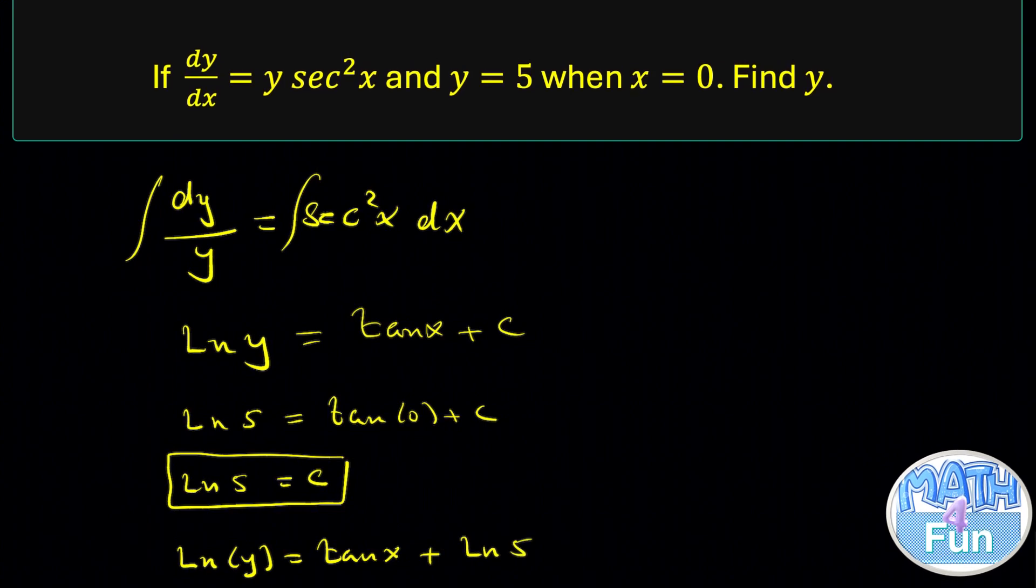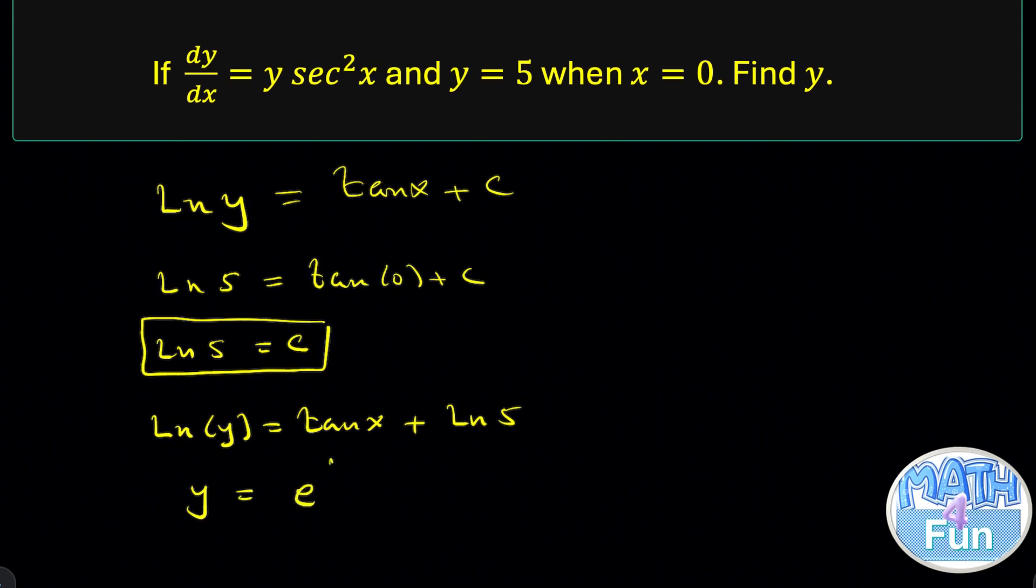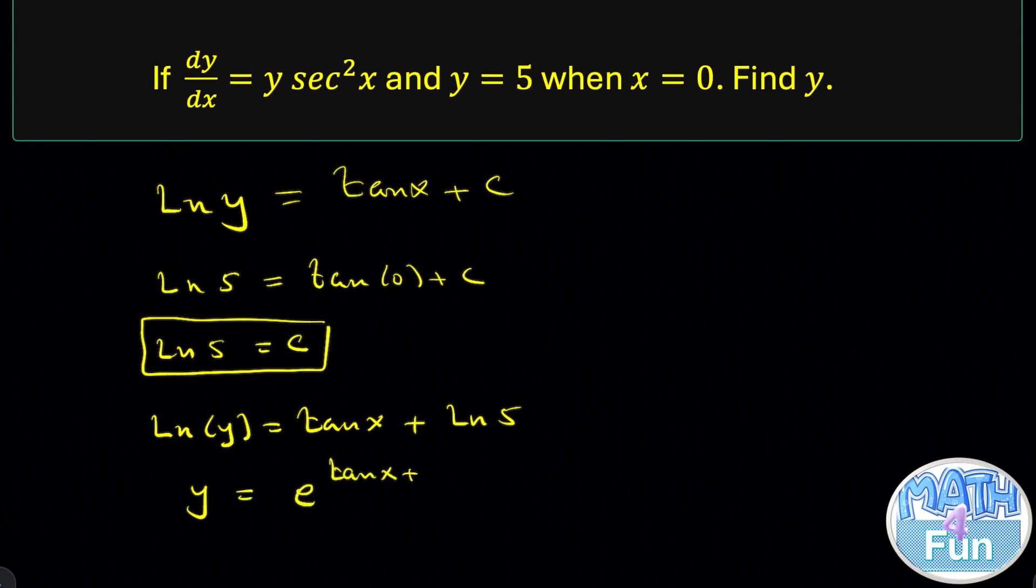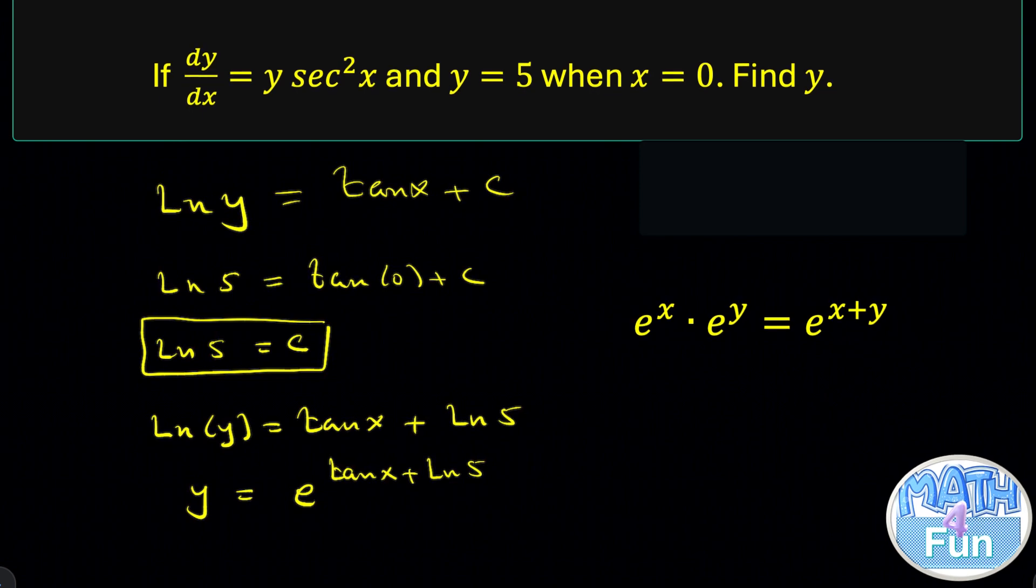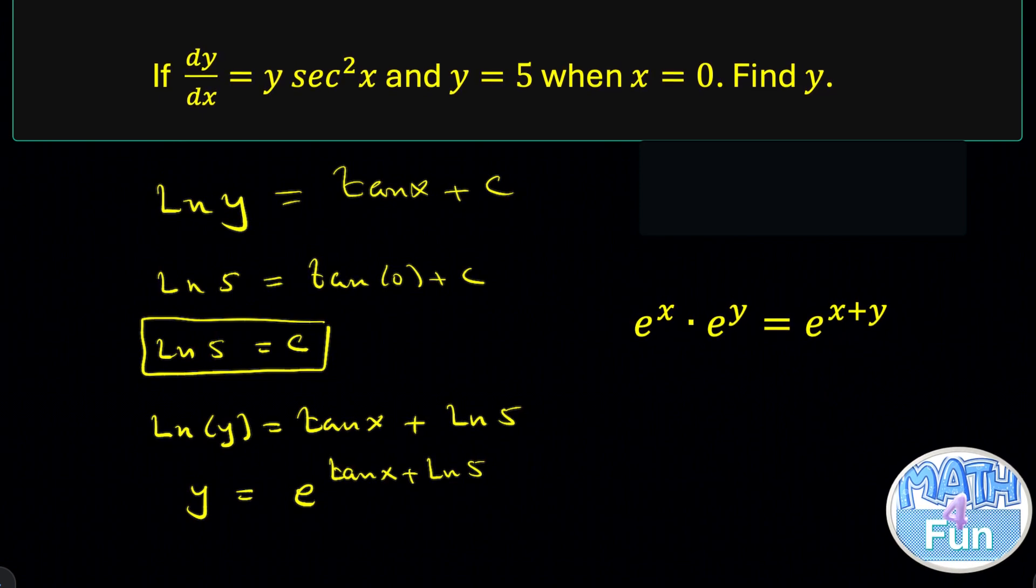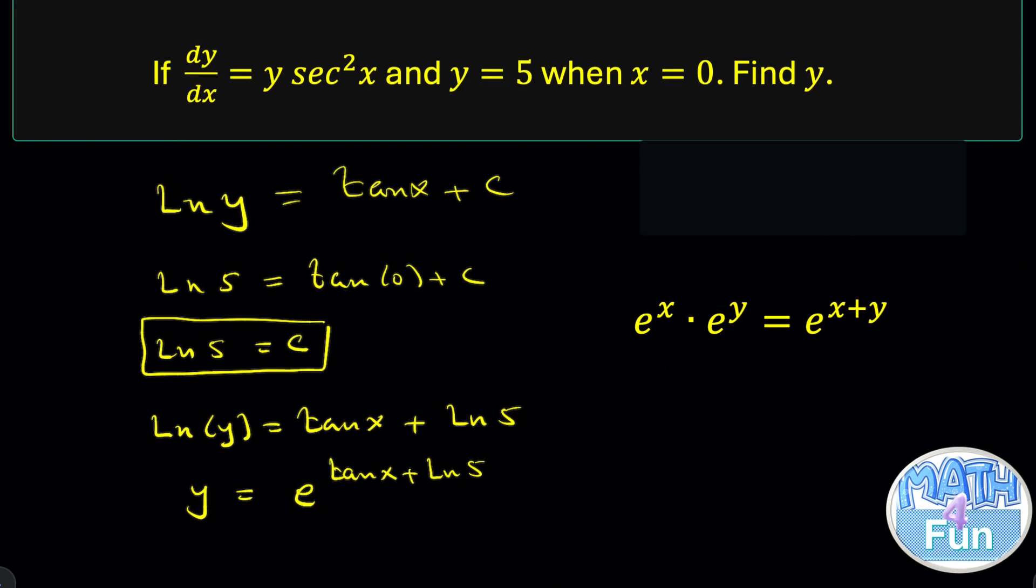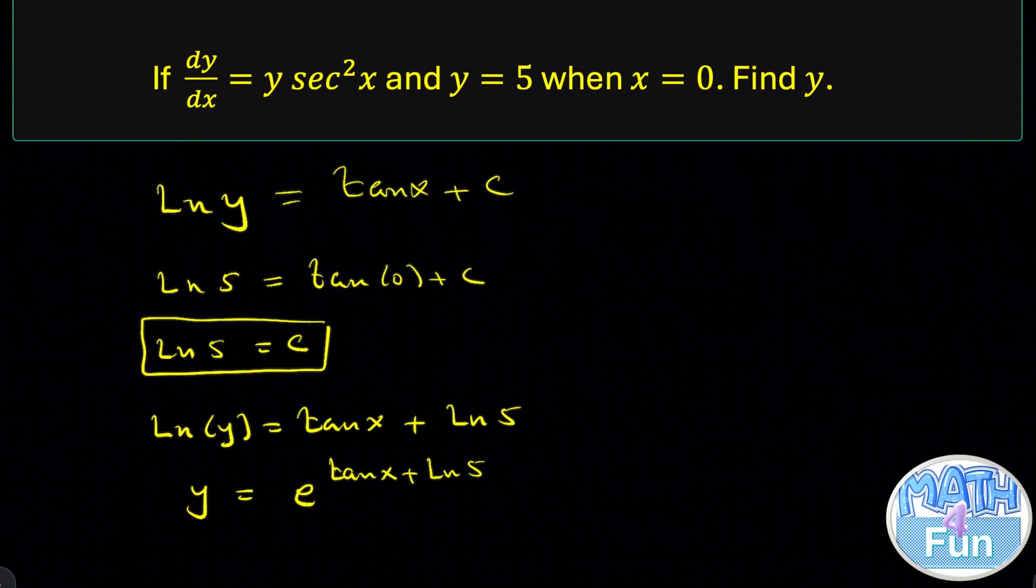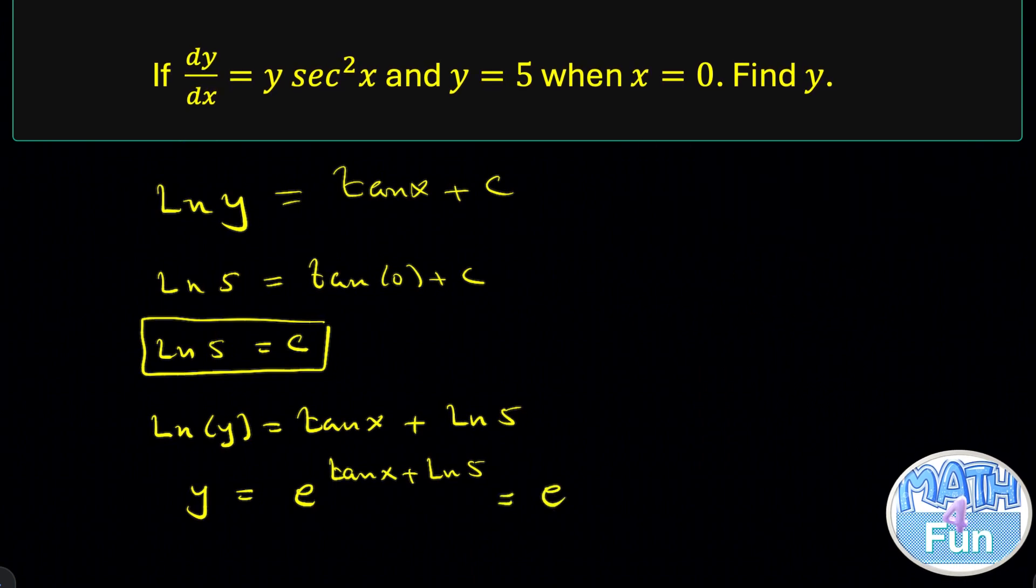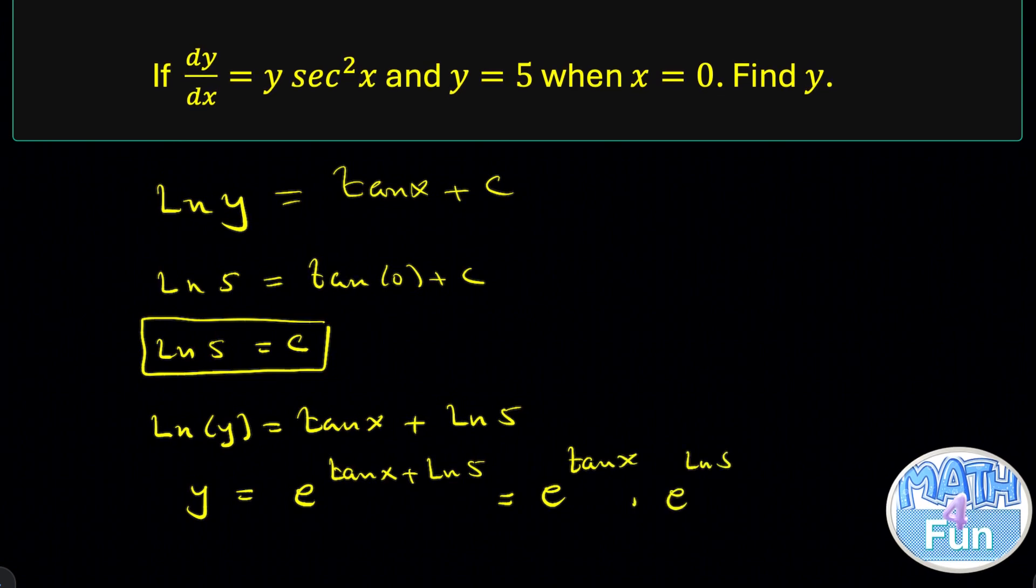Now, when you have ln y equals something, how do you get y? We can say y = e^(tan x + ln 5). And also, we know that when we have e^x times e^y, you can write it as e^(x+y). And we can do the opposite. If you have e^(x+y), we can split it into e^x times e^y. Which means we can write it as e^(tan x) times e^(ln 5).